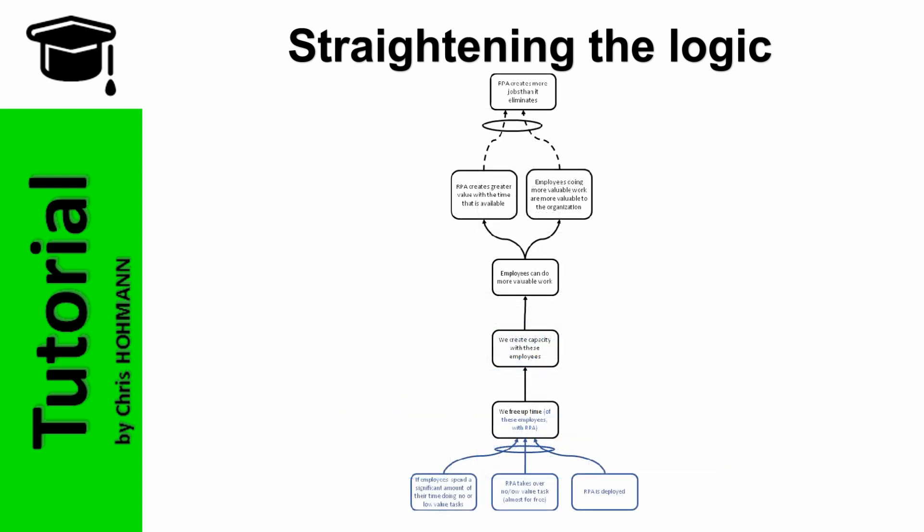Another necessary condition is needed, and it goes: if employees can do more valuable work, and employees do more valuable work, then RPA creates greater value with the time that is available. This condition is necessary because the fact that employees are enabled to do more valuable work is not enough by itself to trigger creating more value. It is necessary that employees are enabled to do more valuable work on one hand, and that they will do it on the other hand.